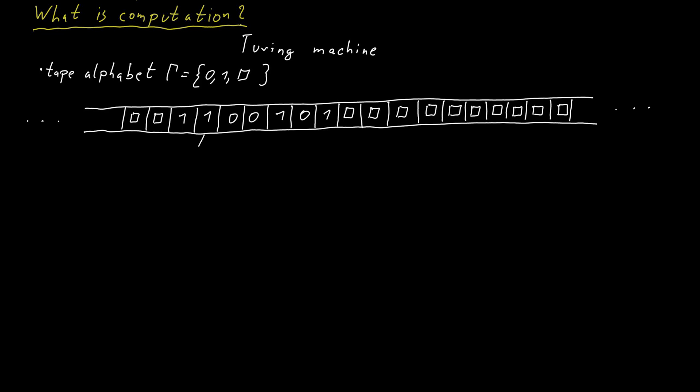To read and write from this tape, the Turing machine has a head. The head in every step of the computation points to a single cell of the tape. In each step of the computation, the tape head can move left or right, so it can move one cell to the left or one cell to the right.